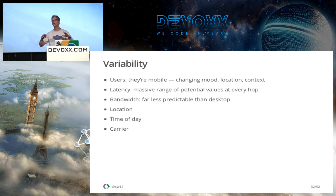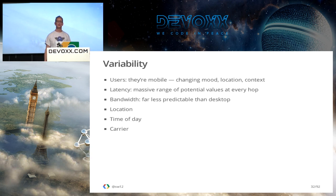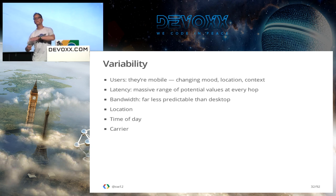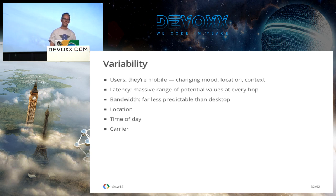The core concept with mobile is variability. Users are always doing different stuff — about all kinds of things like mood, location, context. But we've also got this problem of variations in latency, and I'll talk a bit about latency because that is almost the crux of our problem with mobile now.